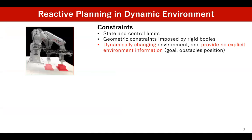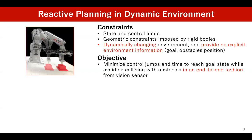We consider the problem of reactive planning in dynamic environments — environments which can change during operation of a robot. As shown in the left figure, the task is reaching a desired goal location where the goal can change during operation. The environment dynamically changes during an episode and we cannot explicitly observe environment information such as obstacle and goal locations. The objective is to minimize control jumps and the time to reach the goal state while avoiding collision with obstacles in an end-to-end fashion from just a vision sensor.